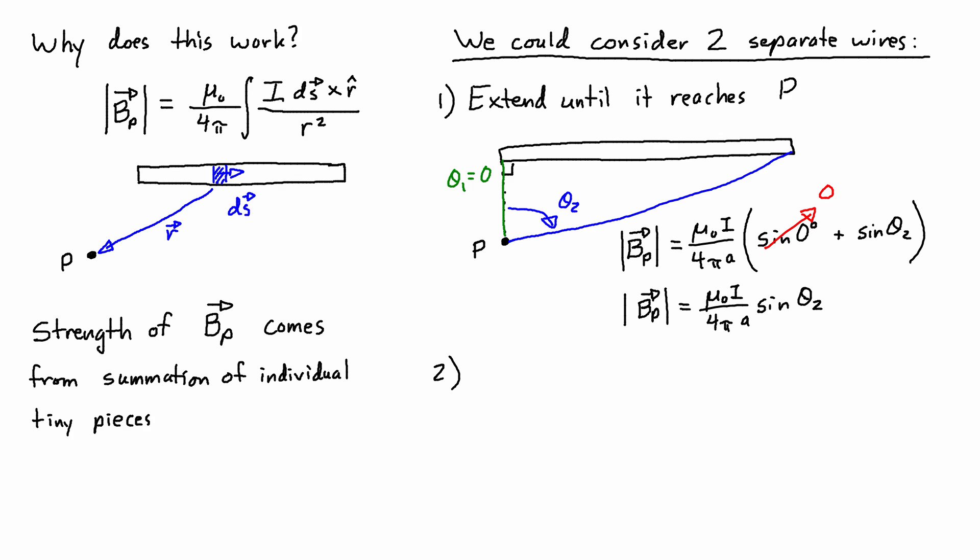Then we could consider a second wire, which is just the extension. So it's just considering the part that we added to extend the wire to point P. And I'm going to call this one theta 1, partly to clearly distinguish it between the first wire, which was extended until it reached point P. And I'll just visually hash in the part in the first wire that was extended.